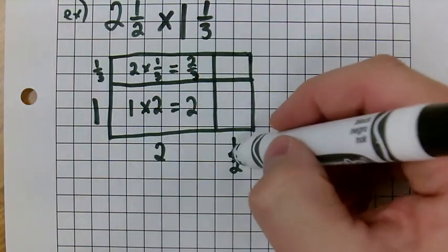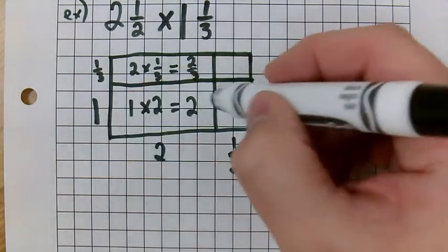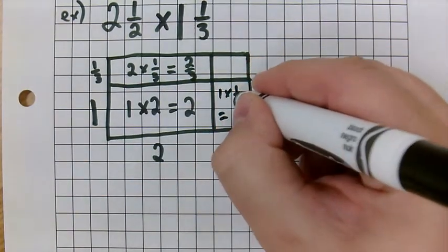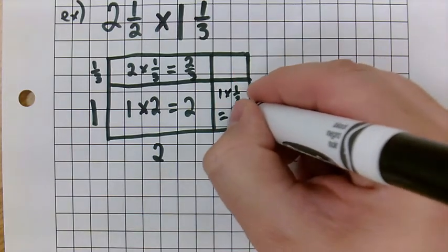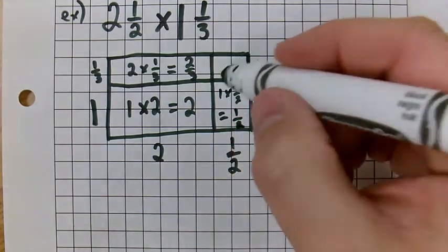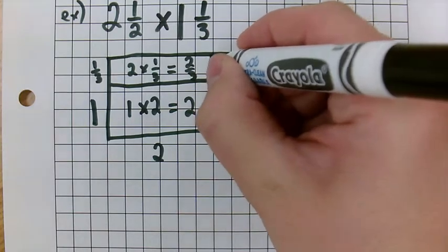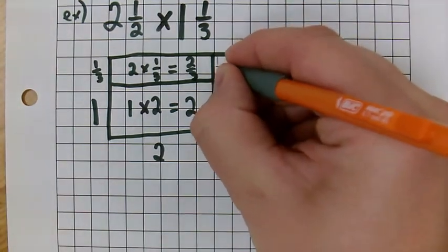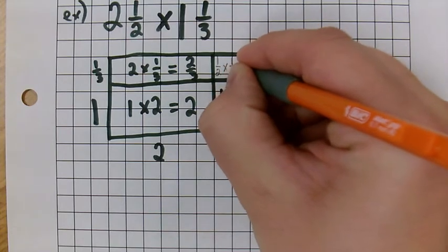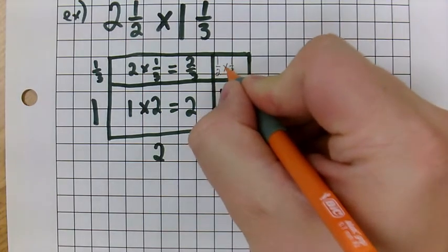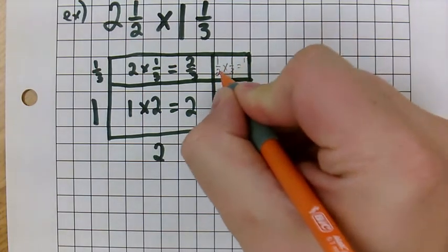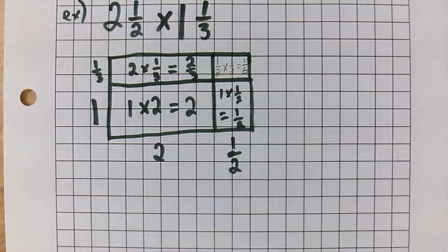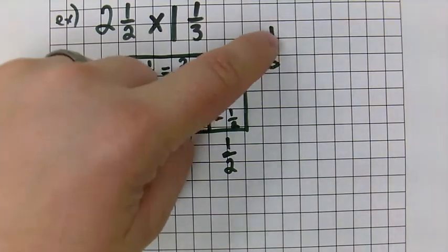And then we're going to go with this here. We have 1 half here and 1 there. It's 1 times 1 half. Anything times 1 is just itself. So, it's 1 half. And then, 1 half times 1 third, which is a little small. We have 1 half times 1 third. We just multiply across. 1 times 1 is 1. And 2 times 3 is 6. This was 1 sixth.